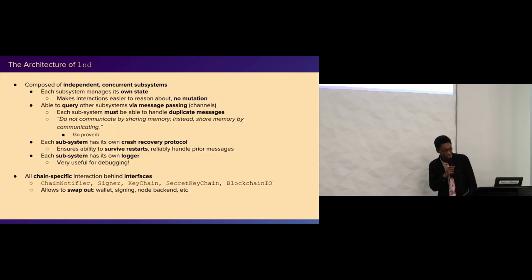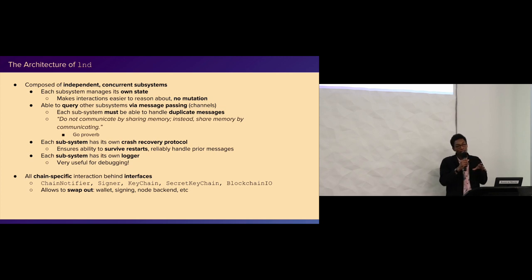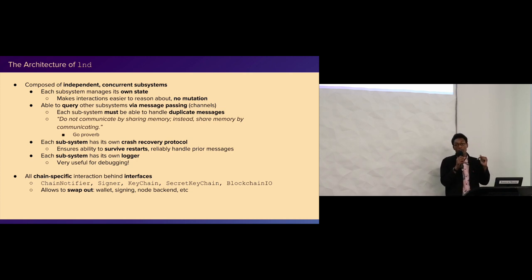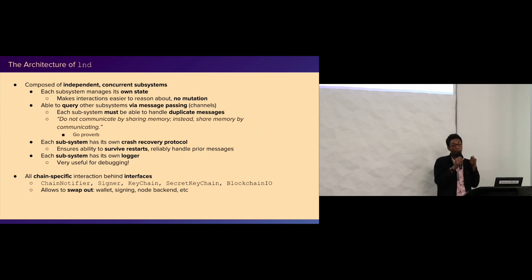Now the architecture of LND. LND has a pretty particular architecture that we try to maintain whenever we're doing code review or writing new subsystems. LND is composed of a set of independent subsystems that run concurrently. They use goroutines and run in parallel, but then use channels to communicate with each other. This is pretty good because when you're working on these subsystems, you know that only it can mutate its own state - no race conditions, no mutex grabbing leading to inconsistent state. In order to modify my own state, I need to get a message sent to me.